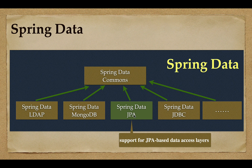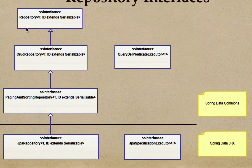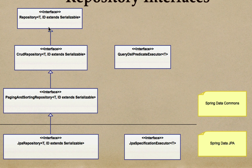In this course we'll be more focused on Spring Data JPA, which basically supports JPA-based data access layers. Now, let's go back to our repository interfaces class diagram. The Repository interface is basically the root interface. CrudRepository extends Repository, PagingAndSortingRepository extends CrudRepository, and QueryDslPredicateExecutor is independent of these. These four interfaces belong to the Spring Data Commons module. JpaRepository and JpaSpecificationExecutor belong to the Spring Data JPA module.